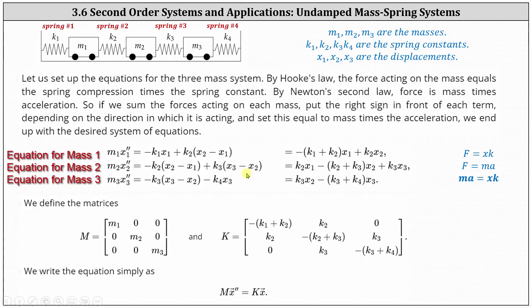Third equation is a little bit different. First we have M3 times X3 double prime, which is mass times acceleration.